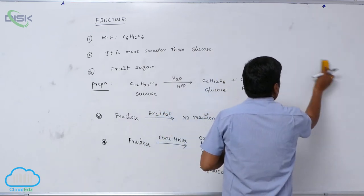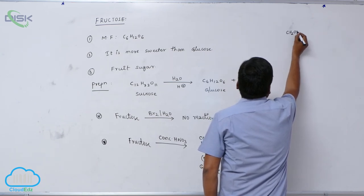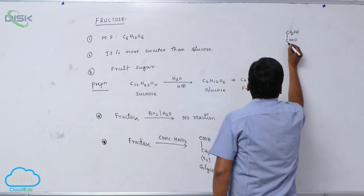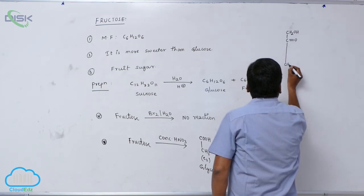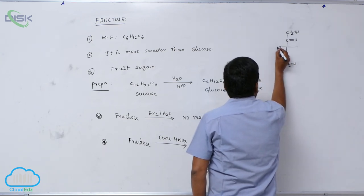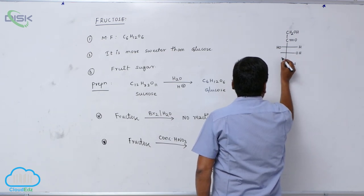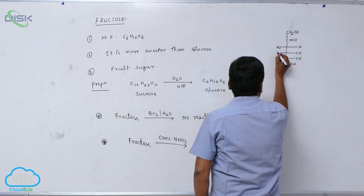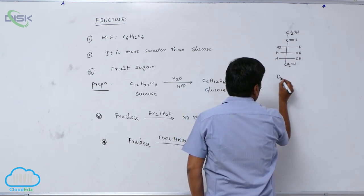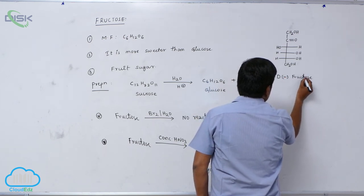The structure of fructose: the first carbon has an alcoholic linkage, the second carbon has a keto group, the third carbon has a hydroxyl group — as in the glucose molecule — the fourth carbon OH is also the same as glucose, and the fifth is also the same. This molecule is known as D-fructose.